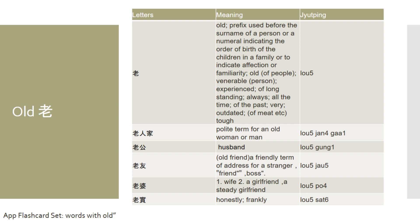The Cantonese term for husband is 老公 (lou gung). A friendly term to address a stranger, a friend, or an old friend — that is the literal meaning behind this word — is 老友 (lou yau). To address a wife in Cantonese is 老婆 (lou po).